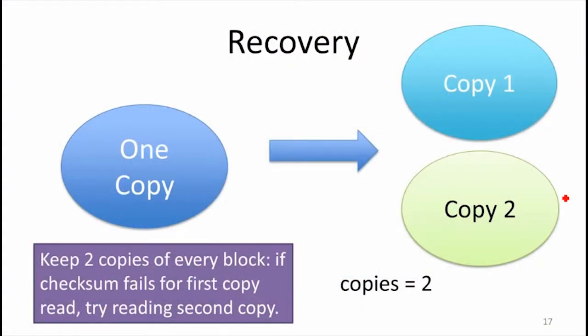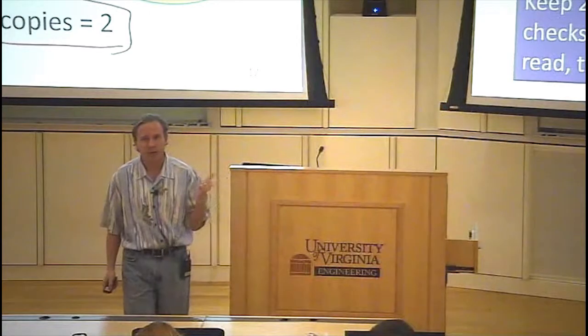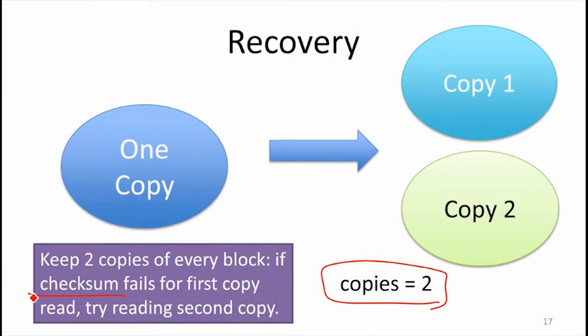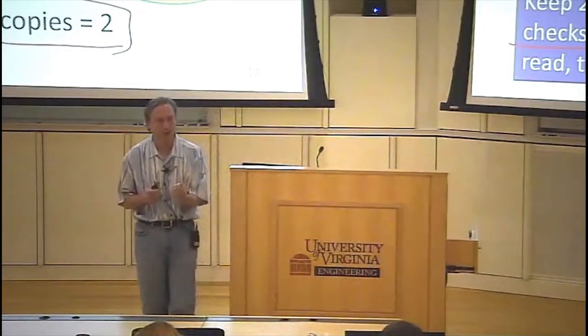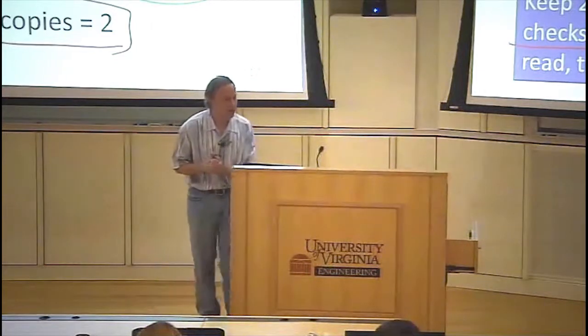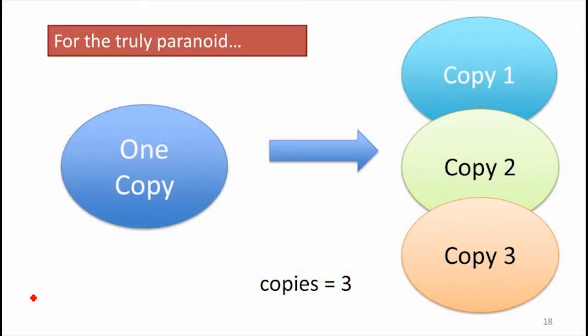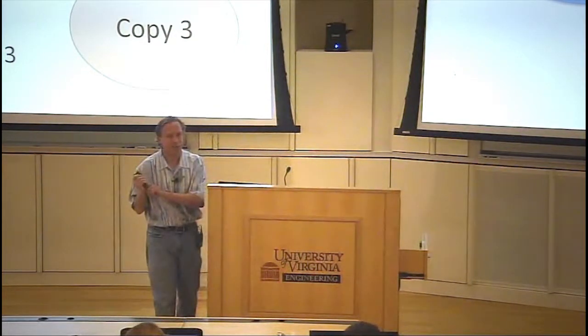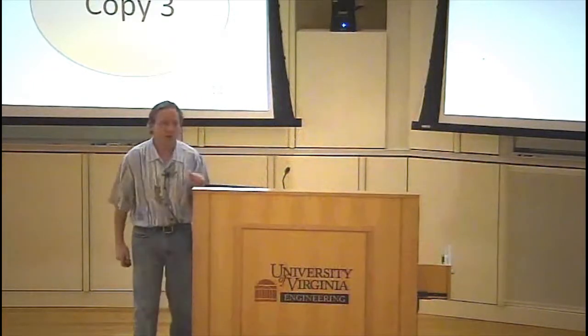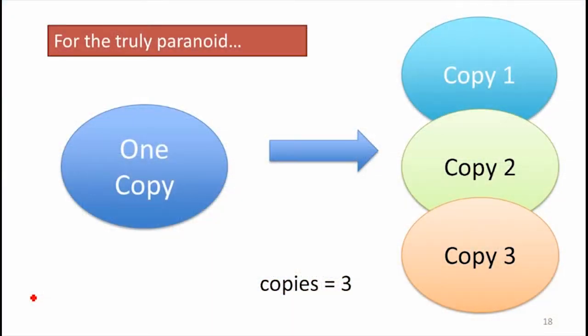The solution is we've got to keep multiple copies. The strategy ZFS uses — and you can configure this — is a default of two copies of everything. One copy sits on disk waiting for when you find that a checksum fails; you don't have to read both copies every time, but if the checksum fails, you read the second copy and hope it's okay. If you're more paranoid, you can set copies to three. This starts to explain why ZFS is not the default file system on macOS: with maybe 512 gigabytes in a MacBook SSD, you don't want to divide it by two or three unless you're really paranoid about your data.